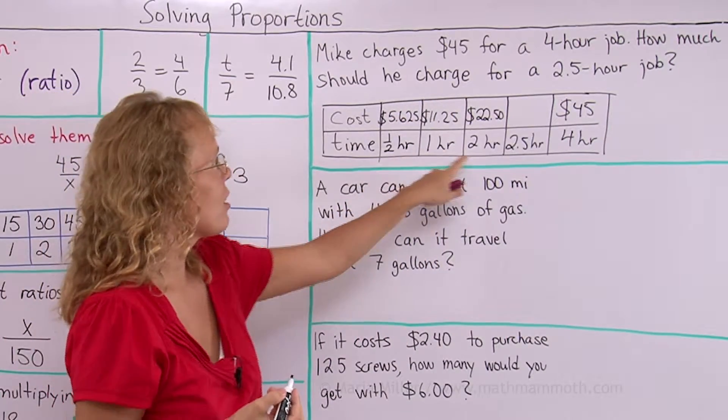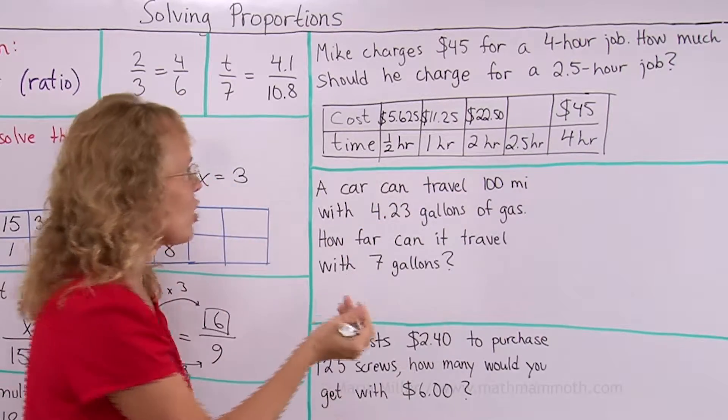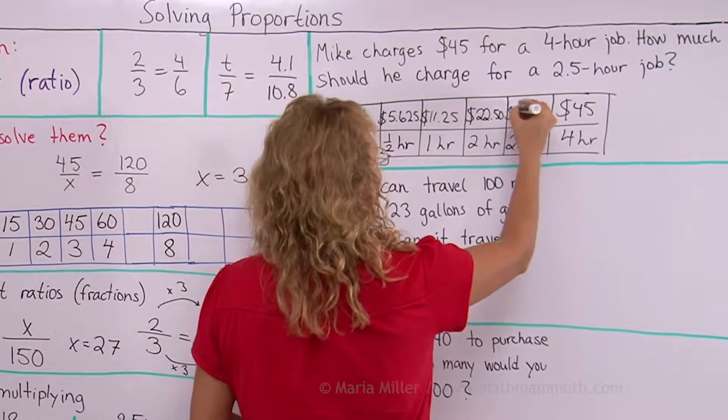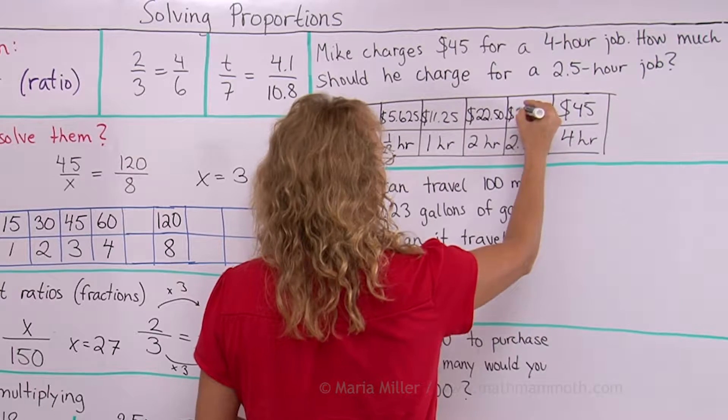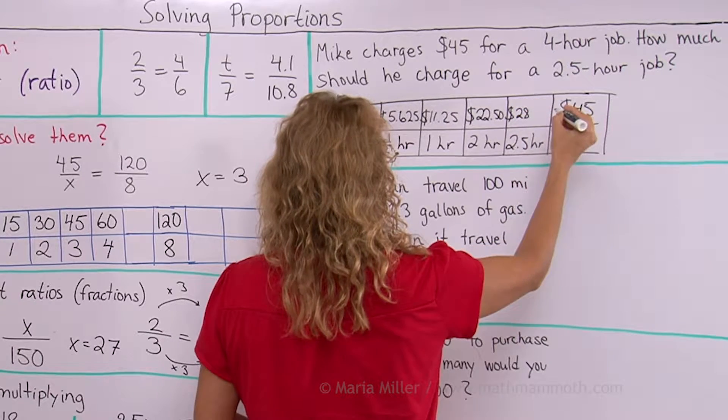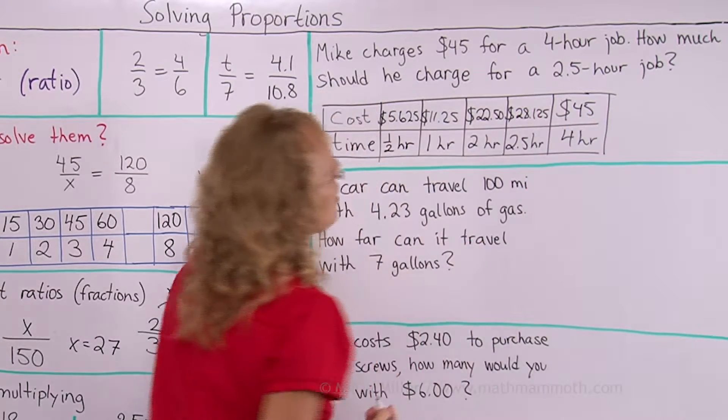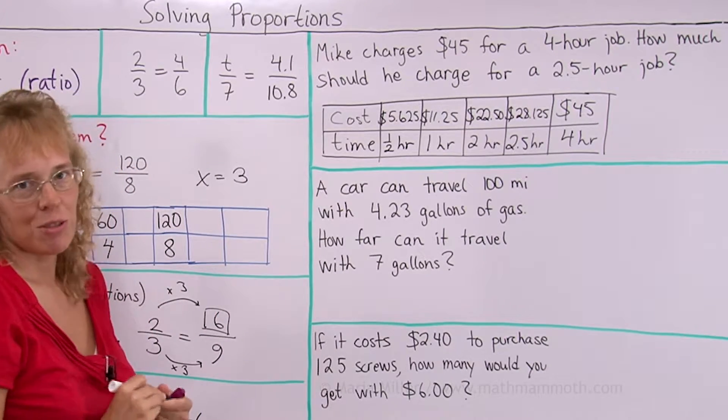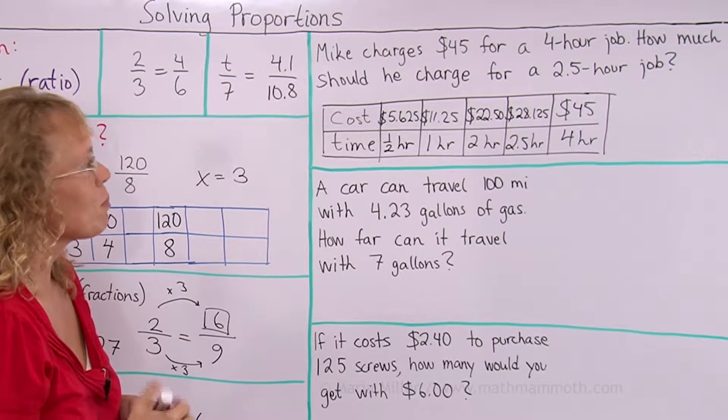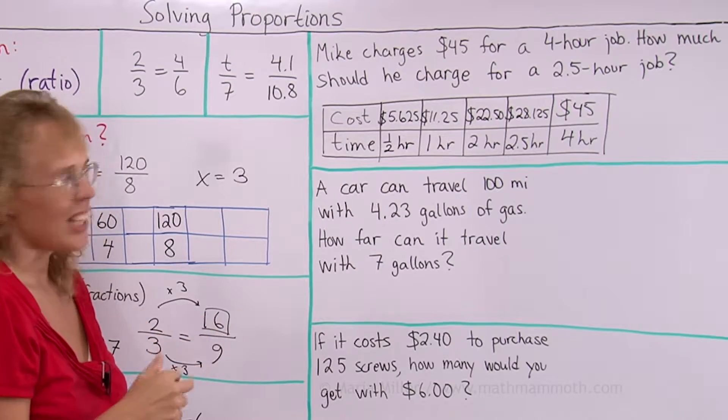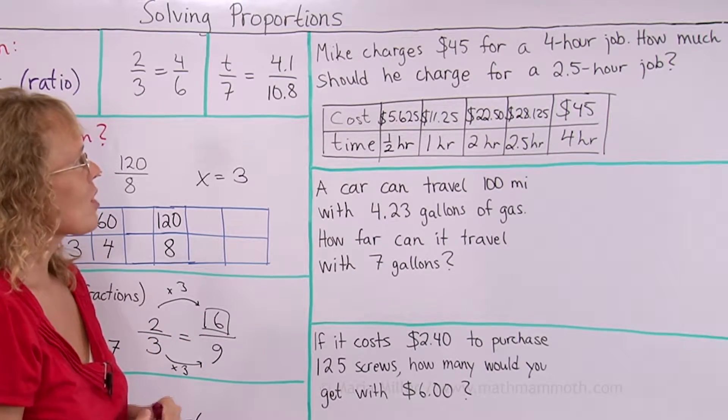And now if I take the half an hour and two hour amounts, I can add those and get the final amount. There's twenty-eight dollars and twenty-eight dollars point one two five. You have to round that to twenty-eight dollars and thirteen cents. Okay so problem solved.